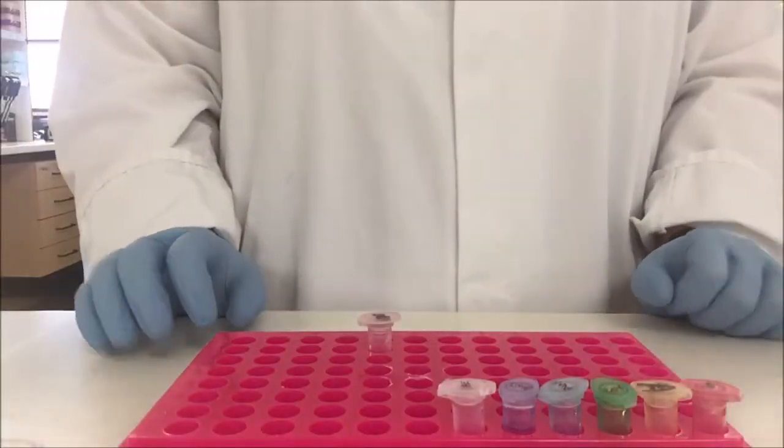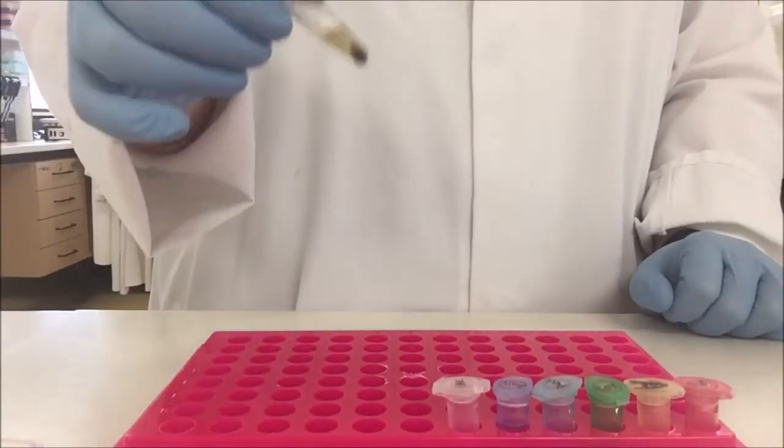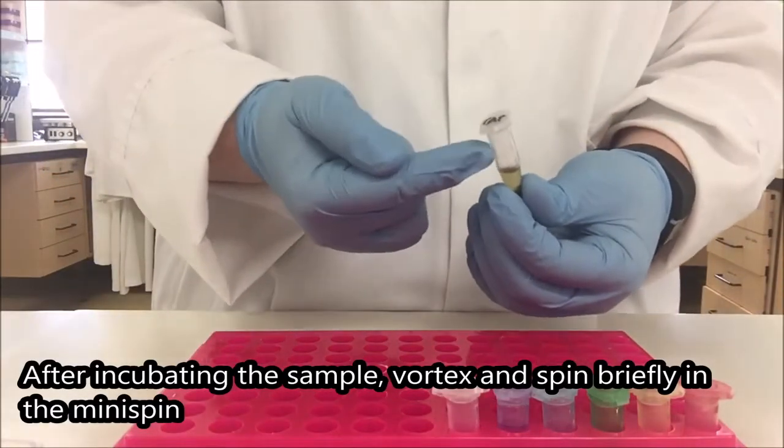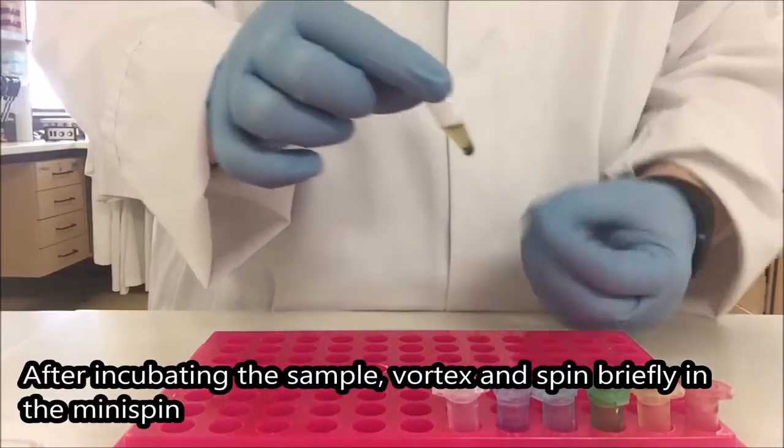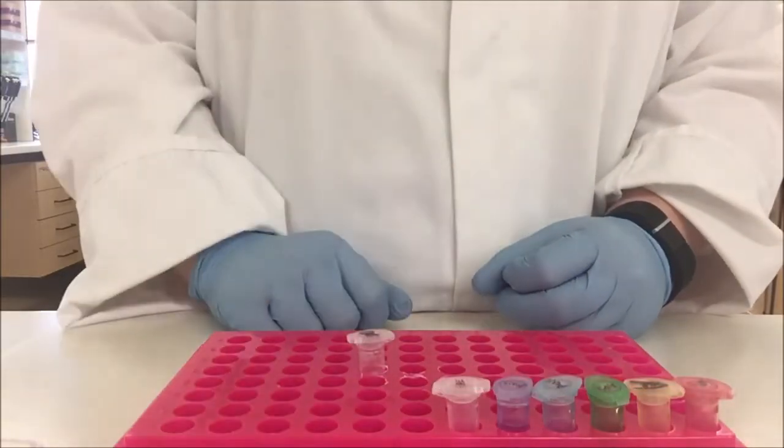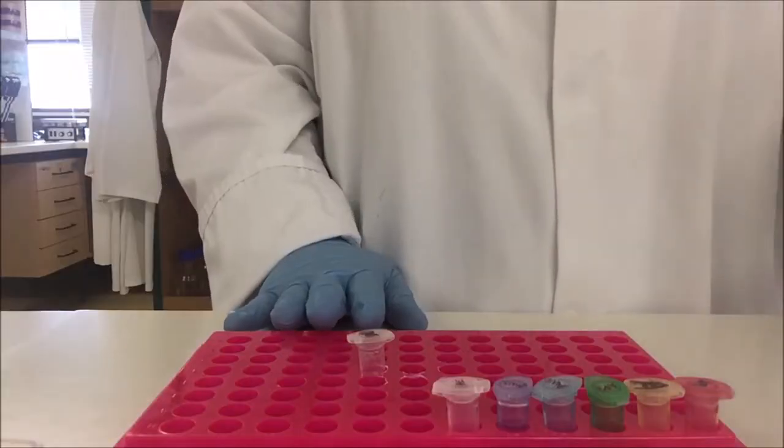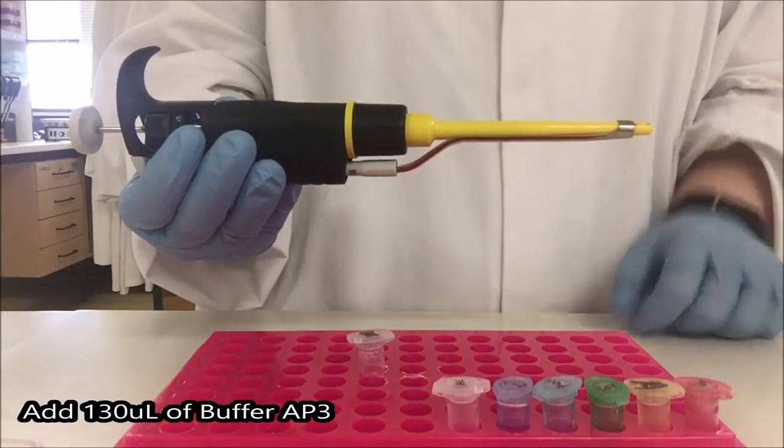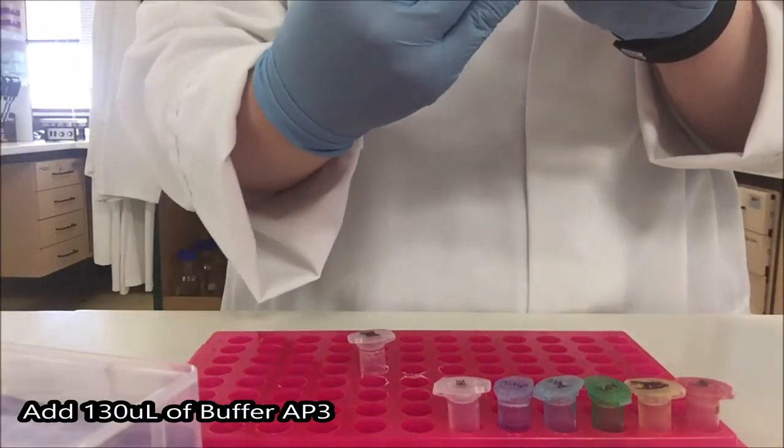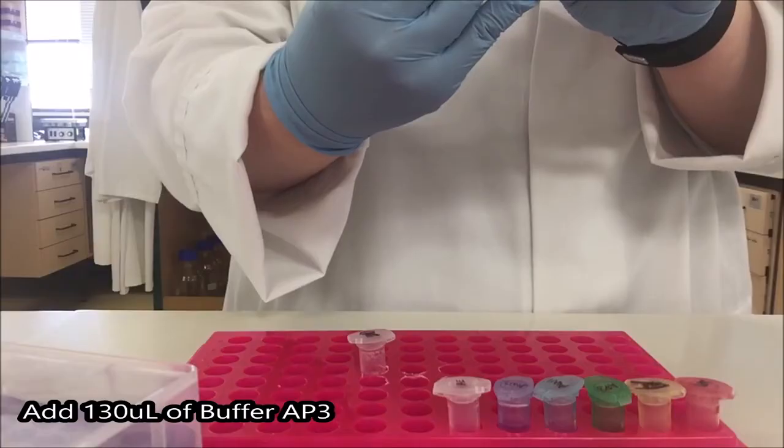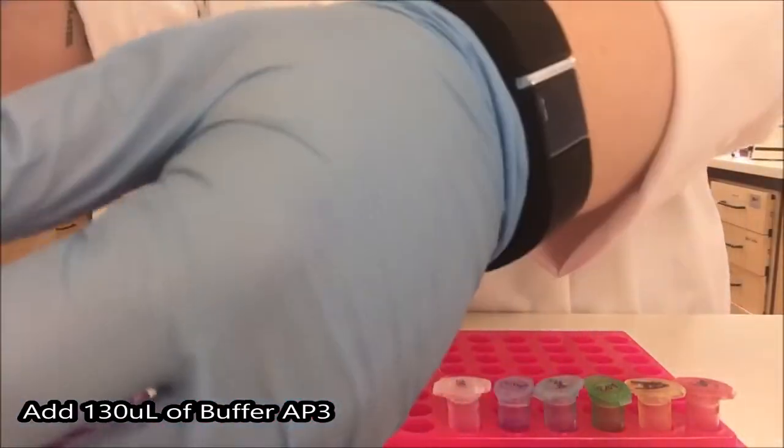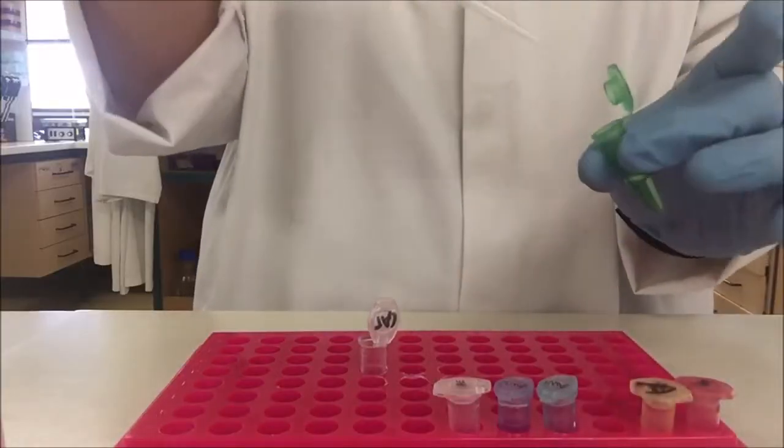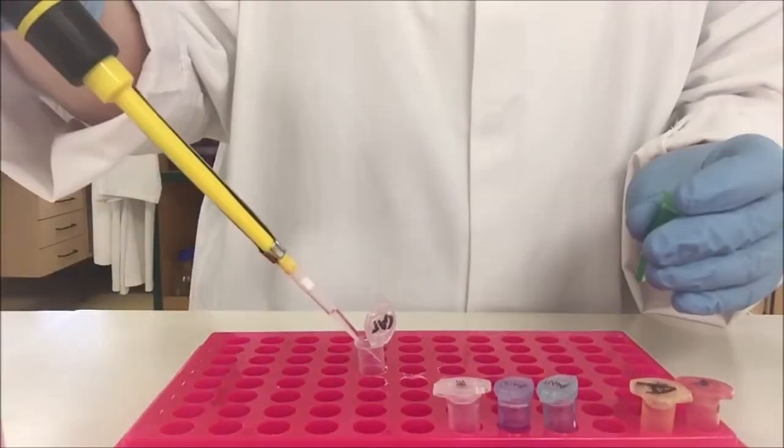My sample's now done incubating. I gave it a last vortex and then a very quick spin in the mini spin to make sure that any material that got stuck to the top of the tube had now been pulled down at the bottom and everything was within the lysis solution. Add 130 microliters of buffer AP3. So I need to use the yellow pipette that has the more blunt end. Set this to 130.